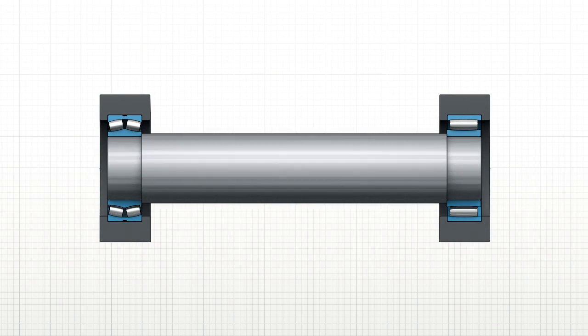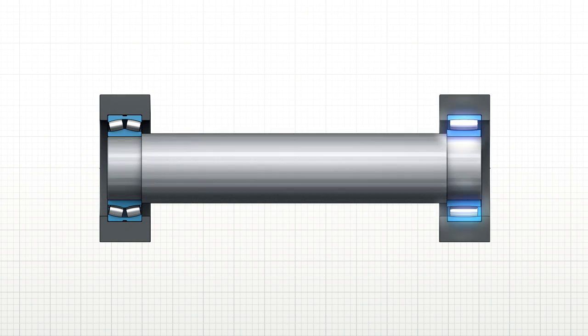The SKF self-aligning system has a spherical roller bearing in the locating position and a CARB bearing in the non-locating position.